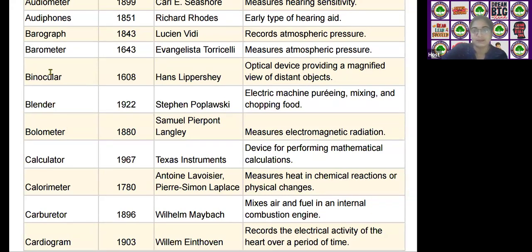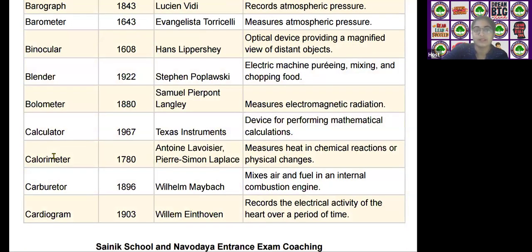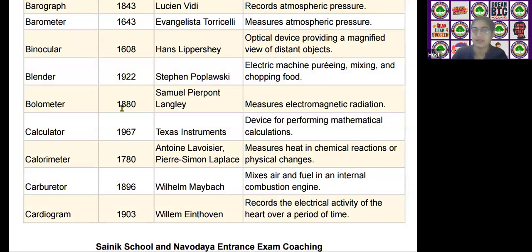The next scientific device is the bolometer, invented by Samuel Pierpont Langley in the year 1880. It is used as a device to measure electromagnetic radiation.